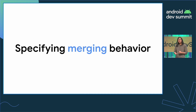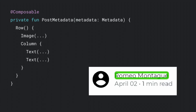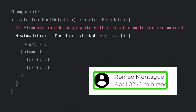Sometimes you might find the need to specify your own merging behavior for your Composables. For example, here we have an element with a drawable and some text. If we don't specify our own merging behavior, Accessibility Services will see these three elements separately as the image and the two pieces of text. However, because it might make sense to group all this content together, something we might consider doing is to set the mergeDescendants property to true — that will allow Accessibility Services to see this element as a whole. Similarly, another way to achieve the same result is by adding a clickable modifier to the whole element row in order to merge it all together.